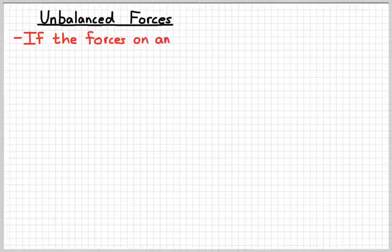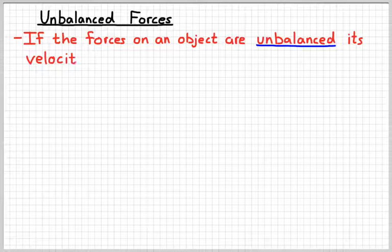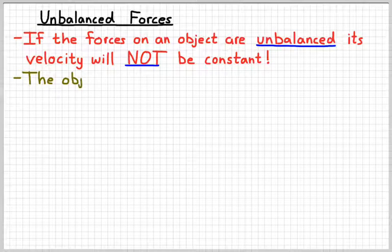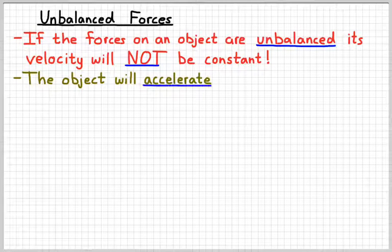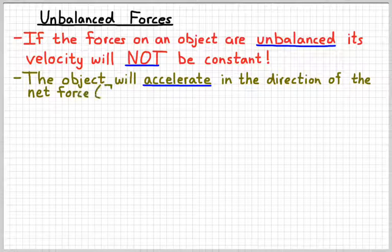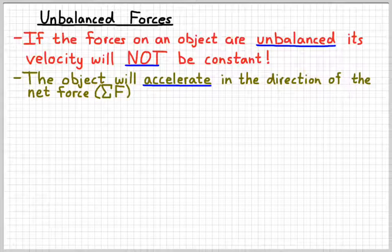So let's talk a little bit about unbalanced forces. When the forces on an object are unbalanced — meaning that the rights are bigger than the lefts or the ups are bigger than the downs — then the velocity is not going to be constant. And remember we call a change in velocity an acceleration. So if the velocity is not constant that means it's going to accelerate, and it's always going to accelerate in the direction of the net force. To find the net force we just do the vector sum of all the forces acting on the object, and whatever direction that force points in, that's the direction the object is going to accelerate.